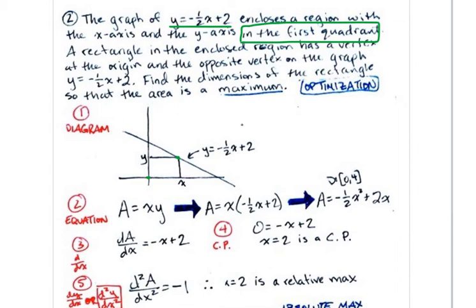Now, area of a rectangle is the same thing as length times width. But here's the problem. When we go to take the derivative, it's not going to be very nice because we have two different variables. We've got a y, and we've got an x. So that's not super helpful.